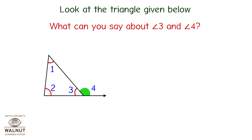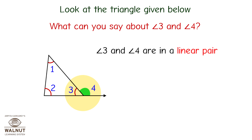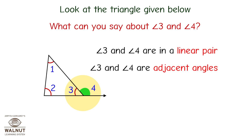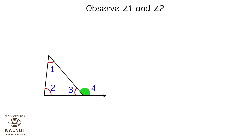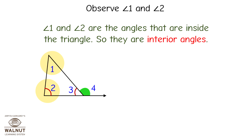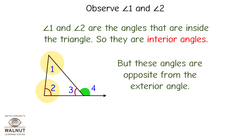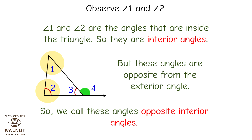What can you say about angle 3 and angle 4? Angle 3 and angle 4 are in a linear pair. Angle 3 and angle 4 are adjacent angles. Angle 3 and angle 4 are supplementary angles. Observe angle 1 and angle 2 — they are the angles inside the triangle, so they are interior angles. But these angles are opposite from the exterior angle, so we call these angles opposite interior angles.